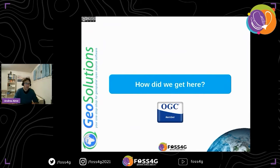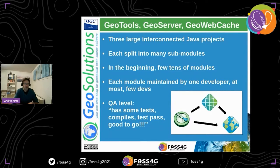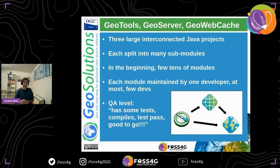How did we get to the point where automated QA was a need rather than a plus? GeoTools, GeoServer and GeoWebCache are three large interconnected Java projects, each split into many sub-modules. In the beginning there were a few tens of modules on each product, but they grew over time. Each module was maintained by one developer, at most a few — each like a king of his own little castle. The QA level required 15 to 20 years ago was simply: it has some tests, it compiles, the tests pass — good to go, release.